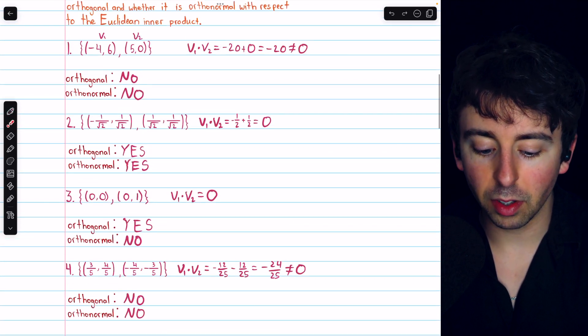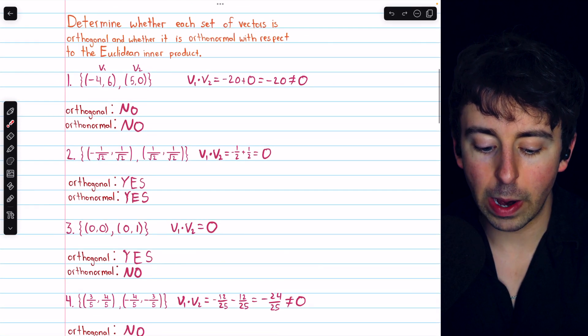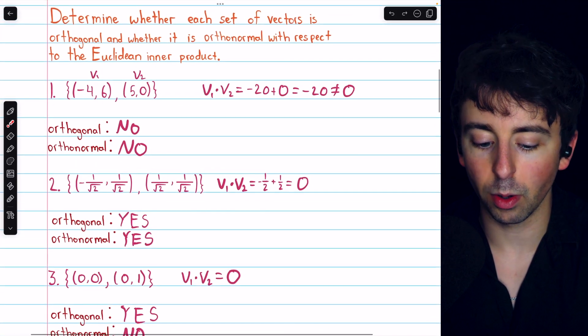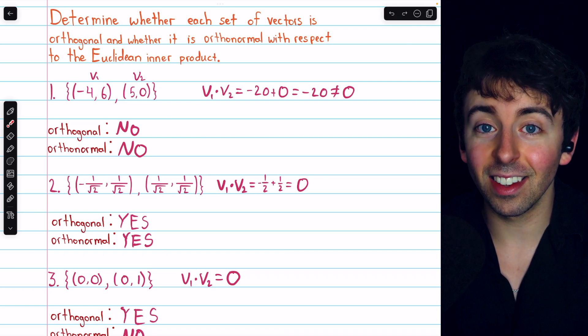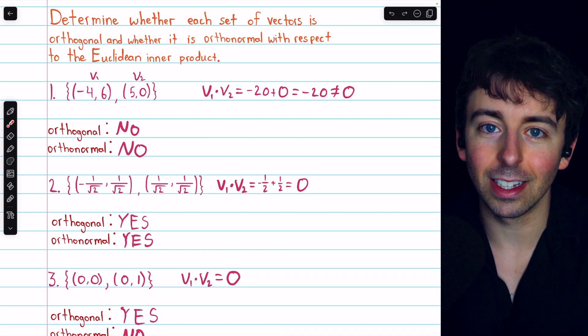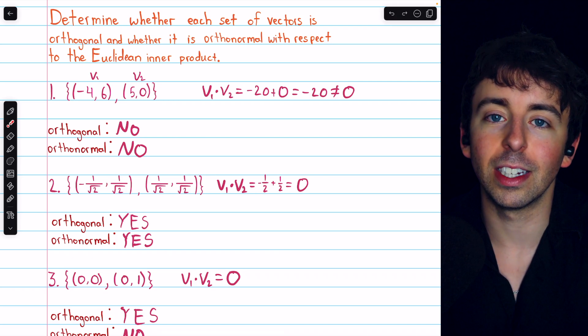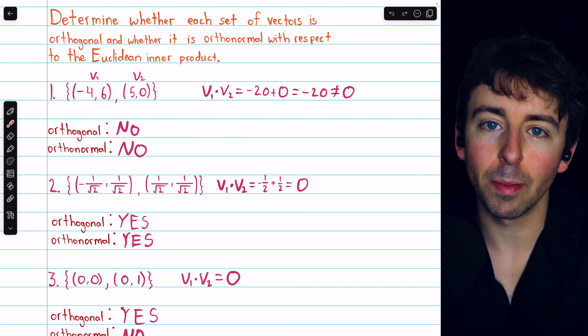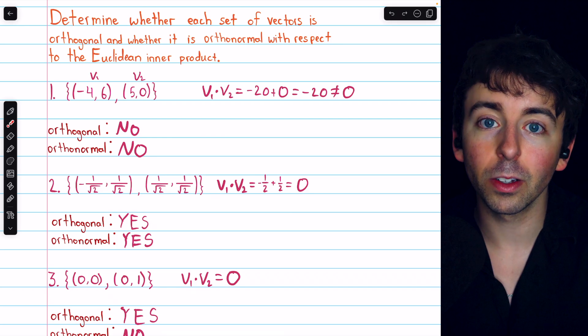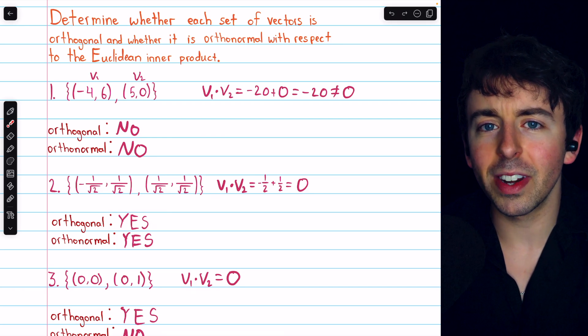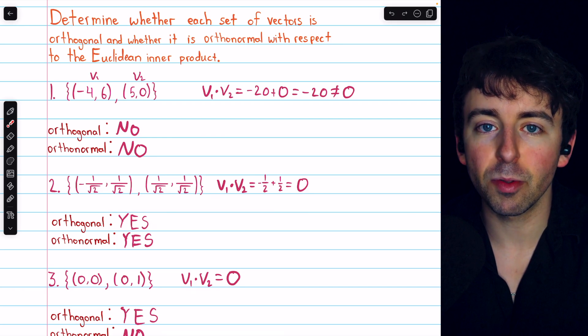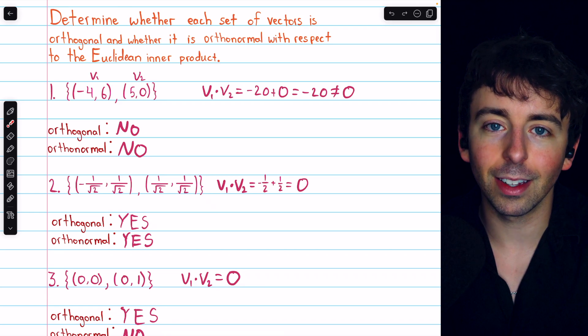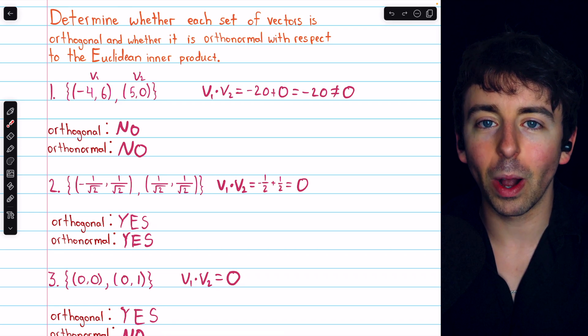So, those are just a few examples of determining if a set of vectors in R squared is orthogonal and if it's orthonormal. Remember, to be orthonormal, a set does need to be orthogonal. It needs to be orthogonal, and the vectors need to be unit vectors. To be orthogonal, the lengths of the vectors don't really matter. They just all have to be orthogonal to each other. Let me know in the comments if you have any questions, and be sure to check out my Linear Algebra course and Linear Algebra Exercises playlists in the description for more. Thanks for watching.